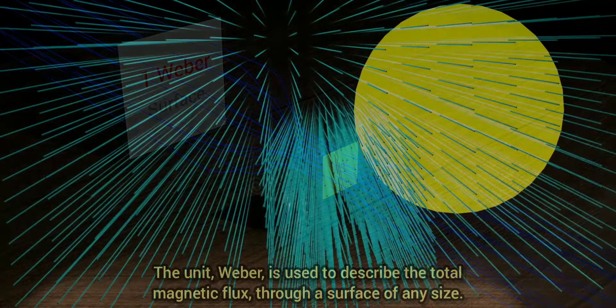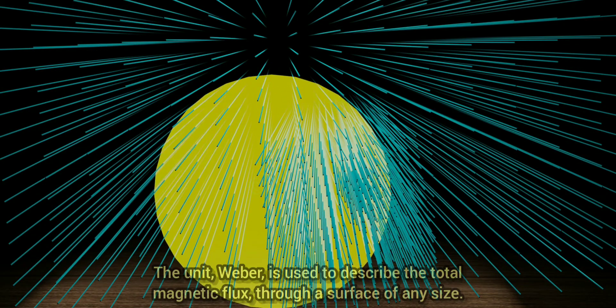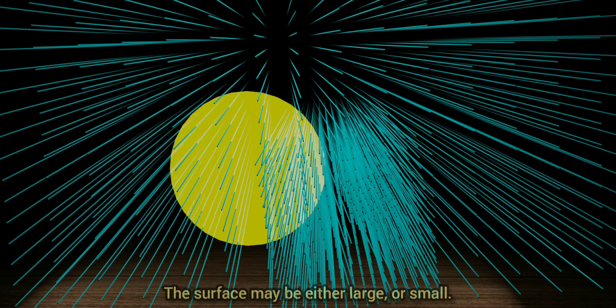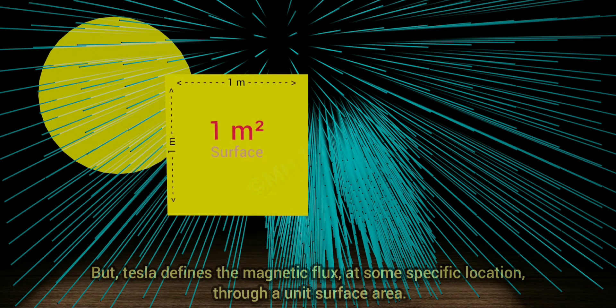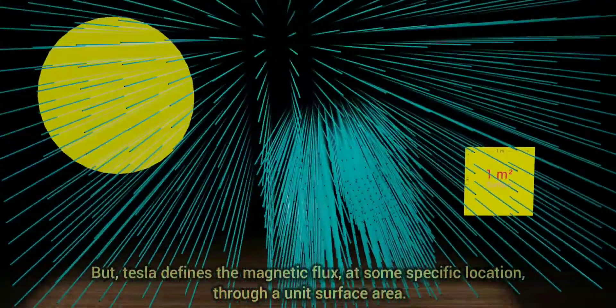The unit Weber is used to describe the total magnetic flux through a surface of any size. The surface may be either large or small. But Tesla defines the magnetic flux at some specific location through a unit surface area.